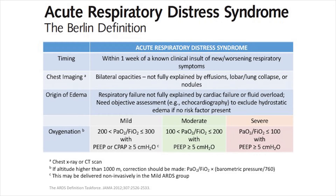In the AECC definition, we had the term ALI, or acute lung injury, as well as the term ARDS for acute respiratory distress syndrome. That original definition described ALI as an umbrella term for all forms of inflammatory hypoxemic respiratory failure, with a PaO2 to FiO2 ratio less than 300, and ARDS being the most severe subset with a PaO2 to FiO2 ratio less than 200.